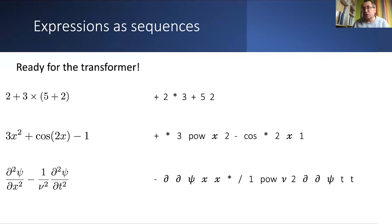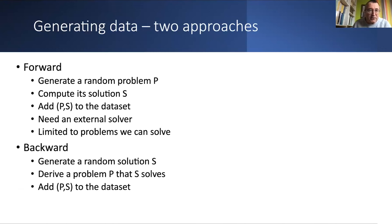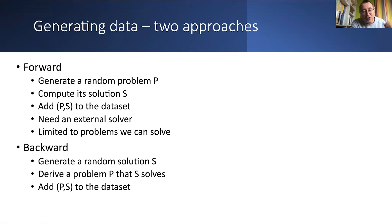The second step is generating data. There are two approaches. The classical way: generate random problems and compute the solutions, giving you a problem-solution pair to add to your training set — rinse and repeat 10 million times. The problem is this only works if you know how to solve the problem and have a solver. For open problems, you go the other way — I call it the backward way: you generate a solution and derive a problem that is solved by that solution. It turns out this works most of the time.